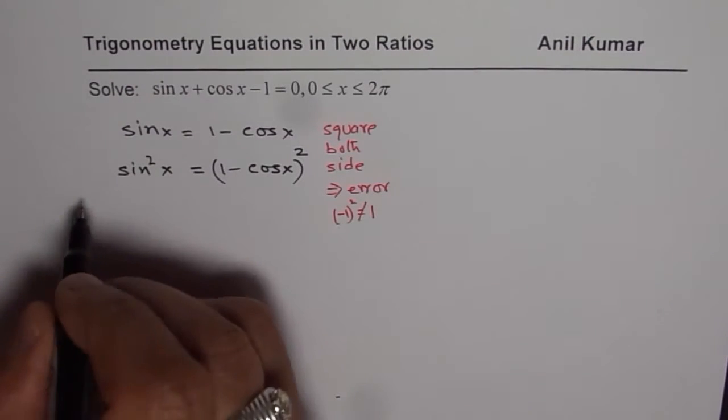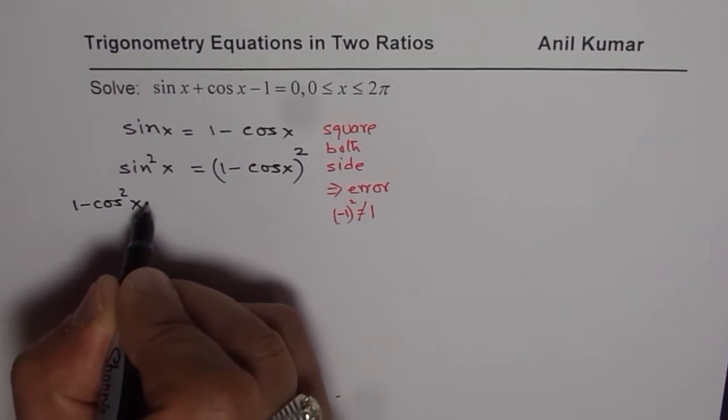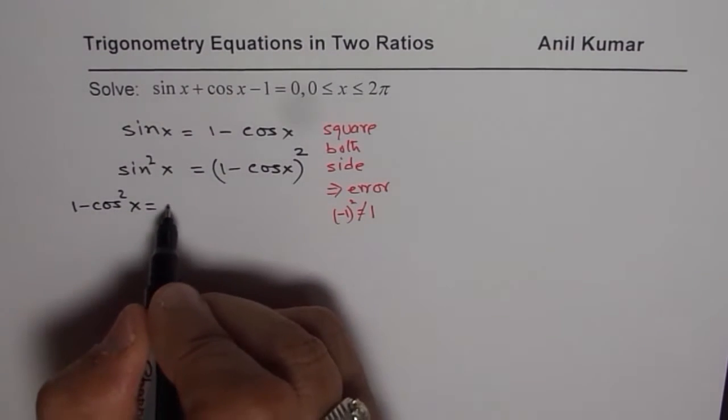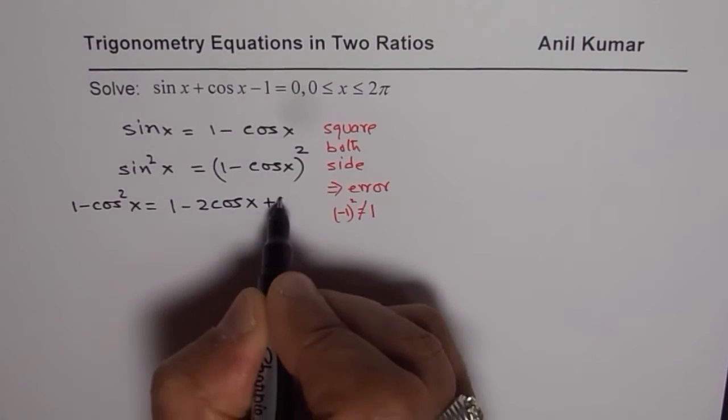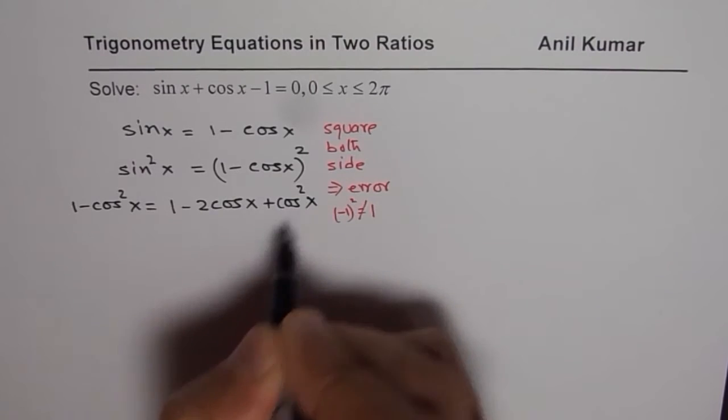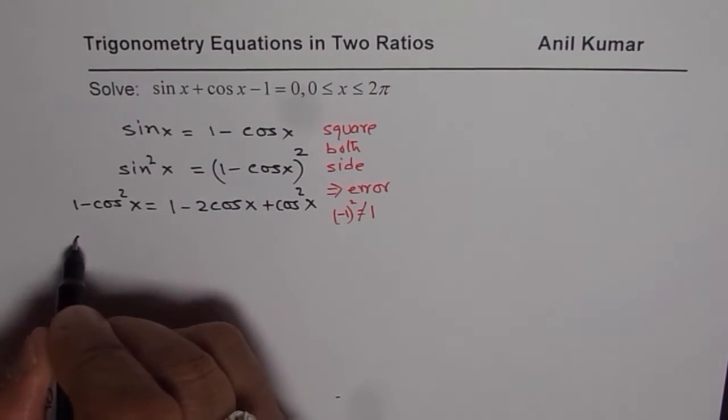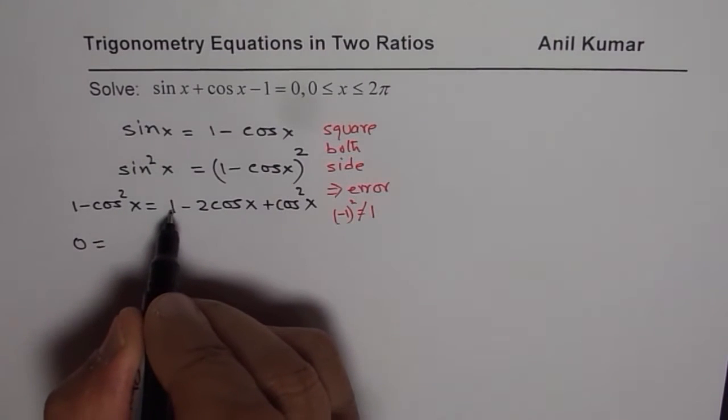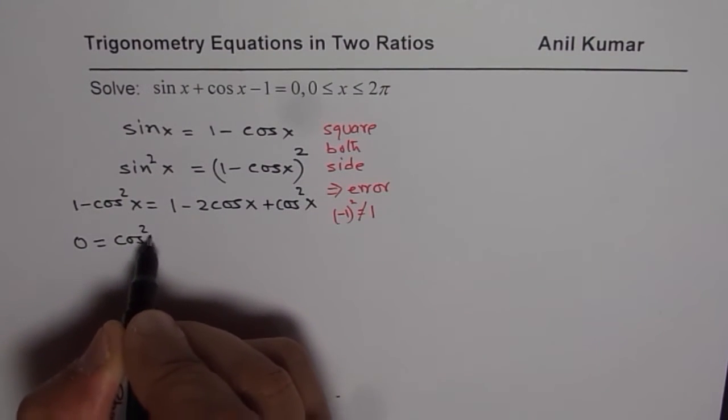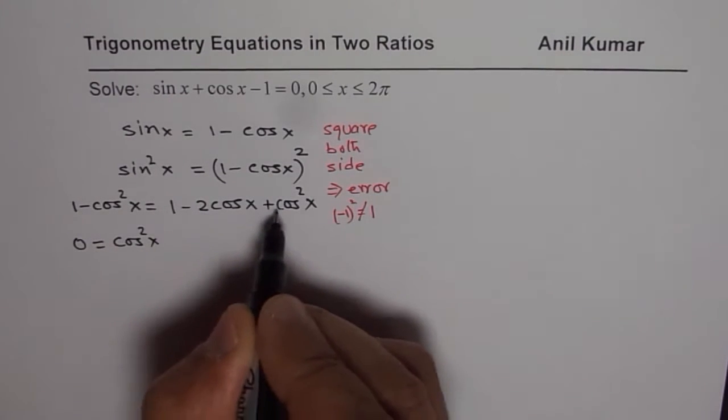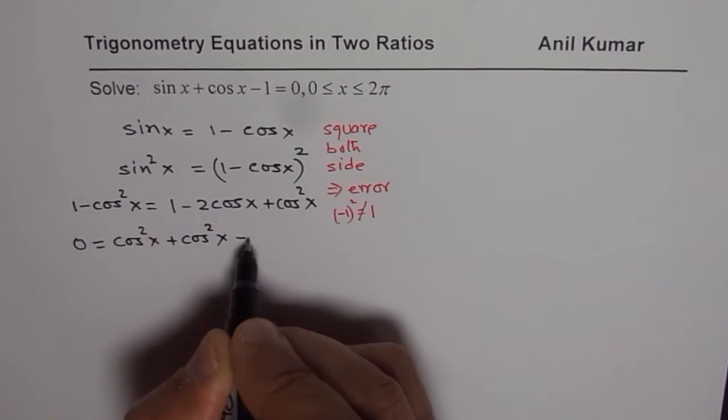Now we can write sin square x as 1 minus cos square x on the left side. And we can expand this right side as 1 minus 2 cos x plus cos square x. Let us bring the cosine terms together on the right side. So we get 0 equals to, 1 and 1 cancel out. So we have cos square x on this and then we have plus cos square x already there, minus 2 cos x.